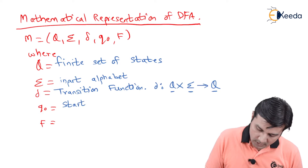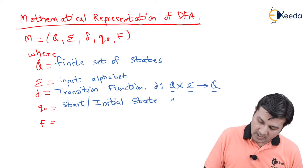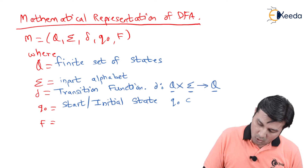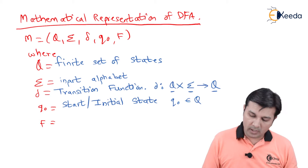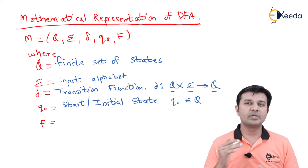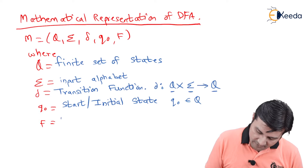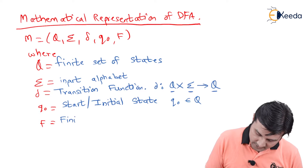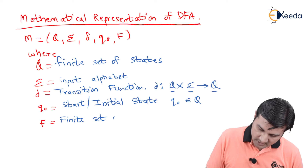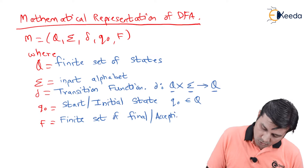Going ahead, Q0 is called the start state, also called the initial state. The important thing is Q0 will always belong to capital Q — that is, the start state will always be part of the set of states. Lastly, F is called the finite set of final states, also called the accepting states.